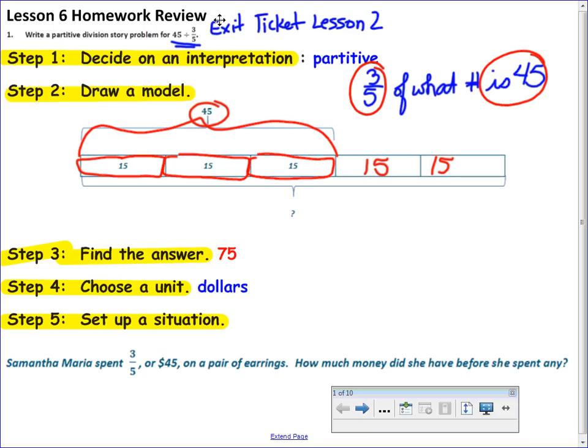Now, you can choose any unit you want. That's the beauty of step 4. You can't get step 4 wrong. You can pick any unit you want to use. So, for this example, I chose dollars. So, for example, 3 fifths is how much money she had left. When she was done shopping, oh, I'm sorry, 3 fifths is what she spent. I apologize. So, she spent 3 fifths of her money. How much money did she have when she started shopping? Well, if 3 fifths is what she spent, and $45 was the cost of the earrings. So, Samantha Maria spent 3 fifths or $45 on a pair of earrings. So, how much money did she have before she spent any? Notice there's no answer in the situation. We already figured that out. So, you have to have your sentences with the two pieces of information from the division where they're trying to find the answer. Okay?